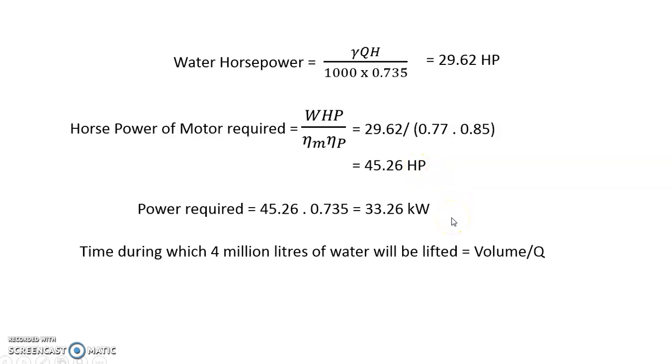Now we also know a concept, and it is said in the problem statement that four million liters of water is to be lifted. So the discharge is so and so which is mentioned in the problem statement, and volume is four million liters, that means 4 × 10⁶ liters. So we shall calculate the time from the classic concept of discharge.